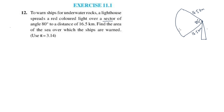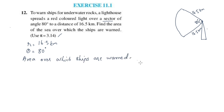If we want to find the area of the sea, the radius is 16.5 and the angle is 80 degrees. We use pi equal to 3.14. The area of a sector formula is: Area = (theta / 360) × pi × r squared.